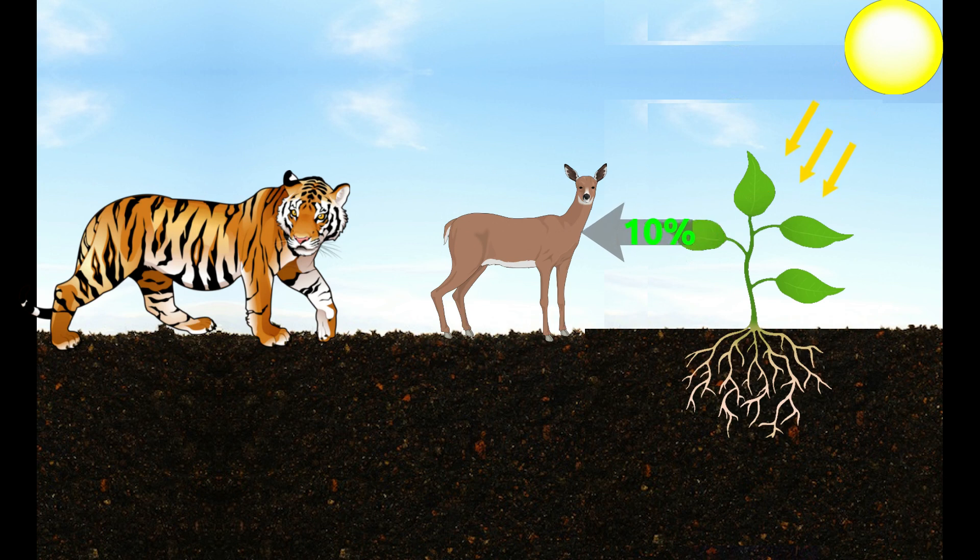It is clear that all living beings directly and indirectly get energy from the sun. Thus, the sun is called the primary and universal source of energy.